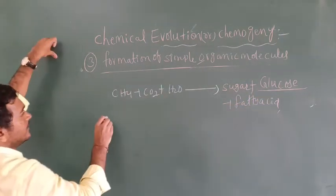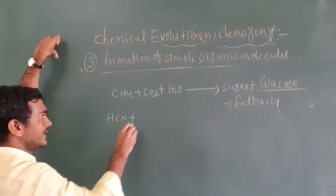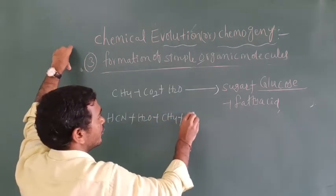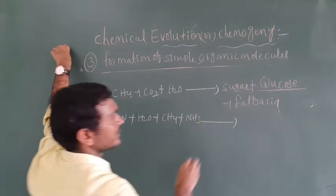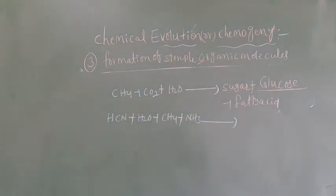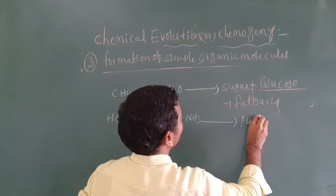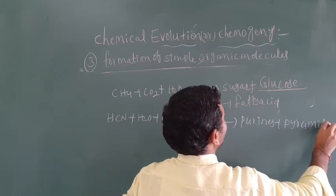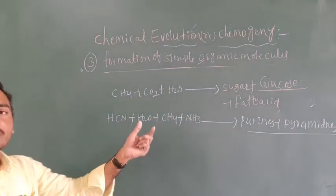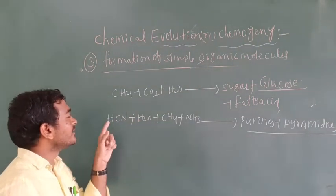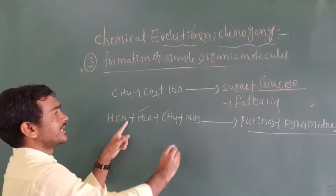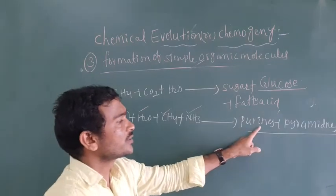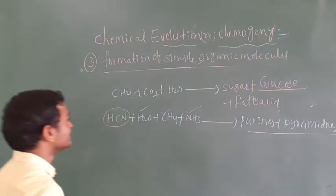Hydrogen cyanide (HCN) plus water plus methane plus ammonia together form purines and pyrimidines. As a mnemonic: H stands for water (H₂O), C stands for methane (CH₄), and N stands for ammonia (NH₃) — together they form purines and pyrimidines.